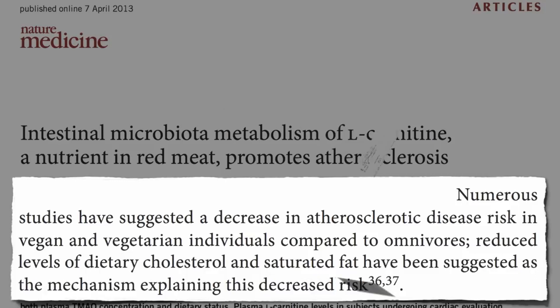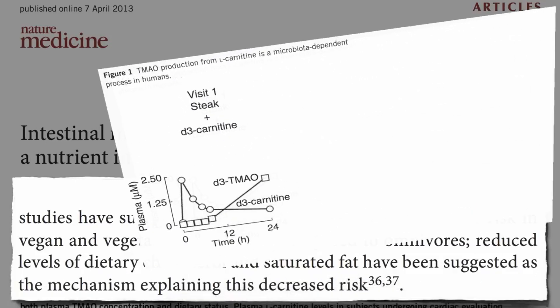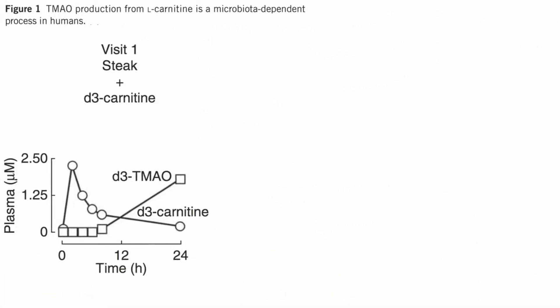What these researchers found was that within 24 hours of carnitine consumption — eating a sirloin steak or taking a carnitine supplement — certain gut bacteria metabolize the carnitine to a toxic substance called trimethylamine, which then gets oxidized in our liver to TMAO, trimethylamine N-oxide, which then circulates throughout our bloodstream.